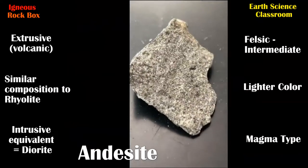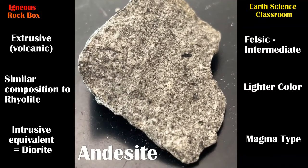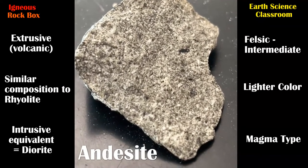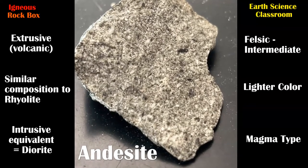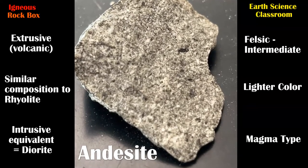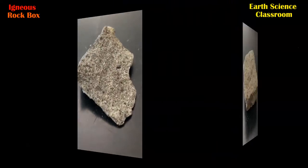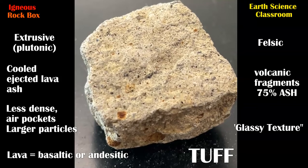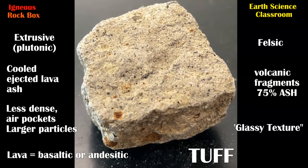Andesite is formed from cooling lava. It is more of an intermediate lava in terms of silica percentage, sitting in between both basalt and rhyolite. Next is tuff — it is equivalent to both pitchstone and obsidian in some respects.